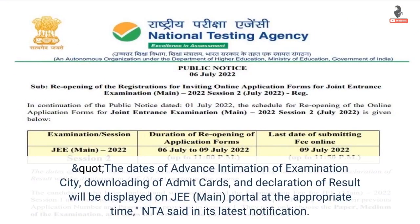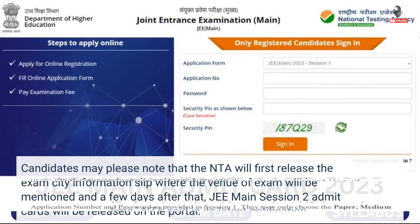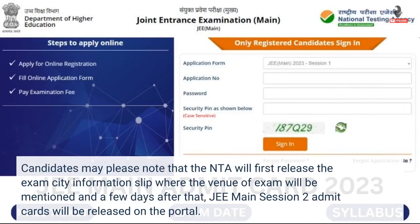The dates of advance intimation of Examination City, downloading of Admit Cards, and declaration of result will be displayed on the JEE Main portal at the appropriate time, NTA said in its latest notification. Candidates may please note that the NTA will first release the Exam City information slip where the venue of the exam will be mentioned, and a few days after that, JEE Main Session 2 Admit Cards will be released on the portal.